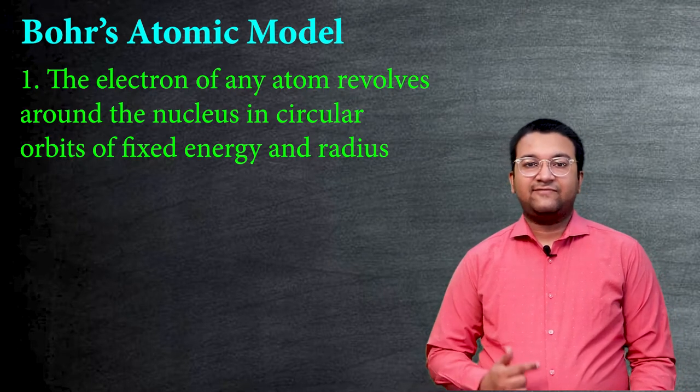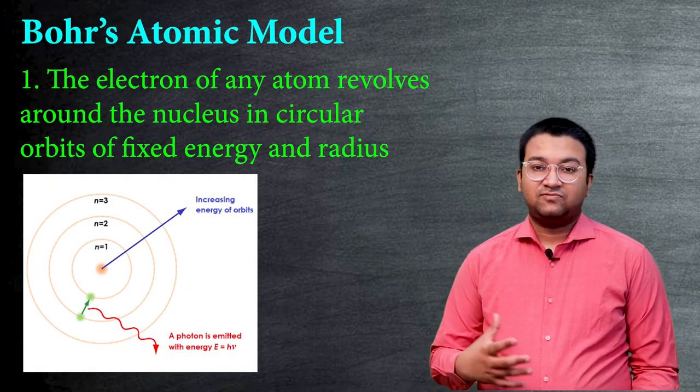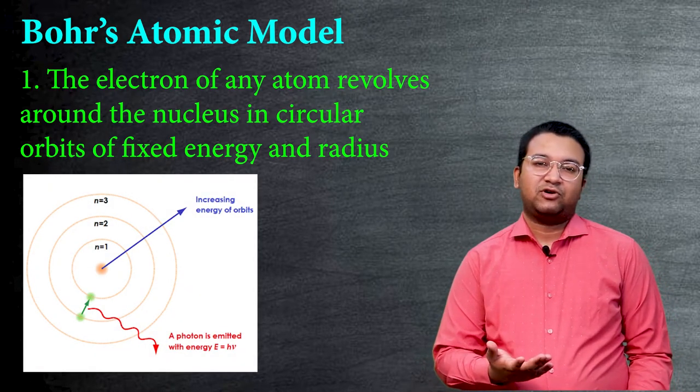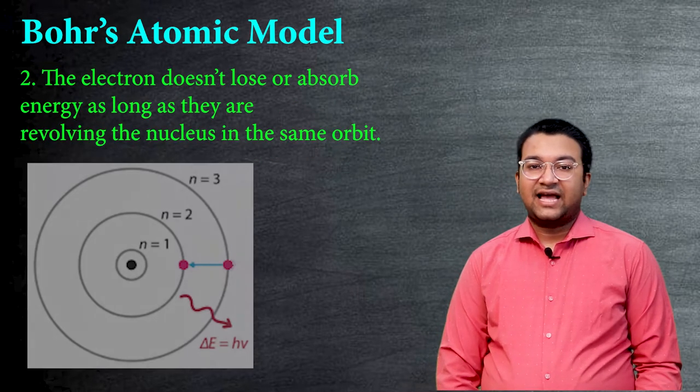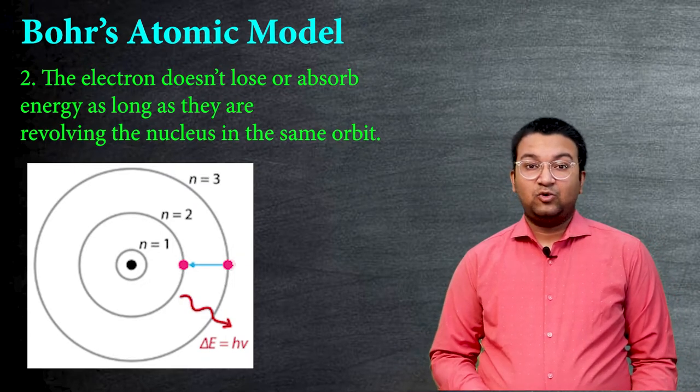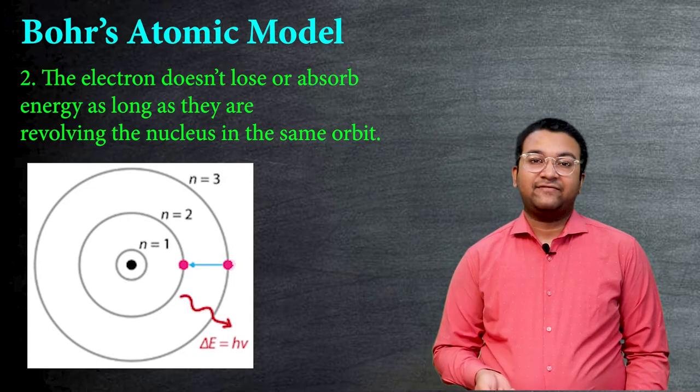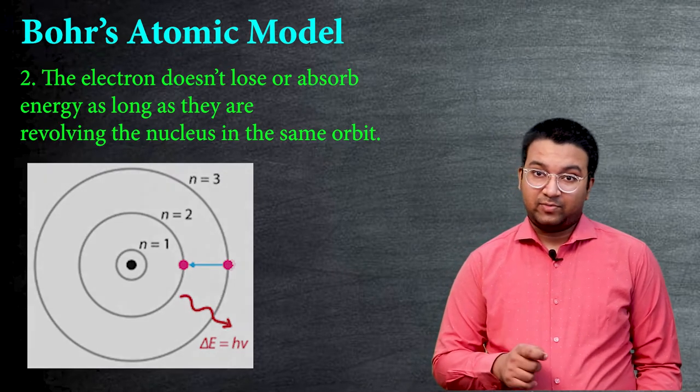And they continuously revolve around that orbit which is basically surrounding the nucleus, which is pretty much similar to the planetary model of our solar system. The next point is that as long as the electron revolves around that orbit, it neither loses energy nor gains energy, which means it will have the exact same amount of energy which is the energy of that particular orbit.